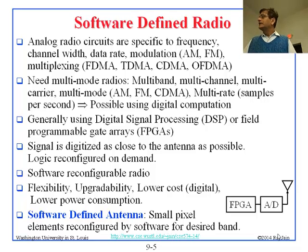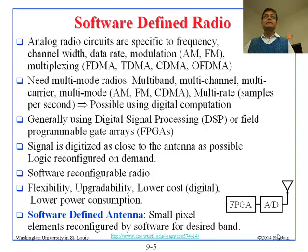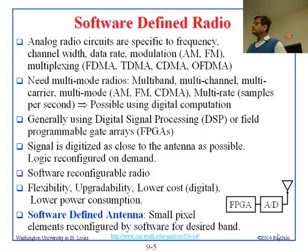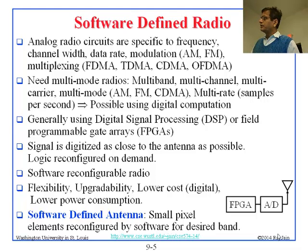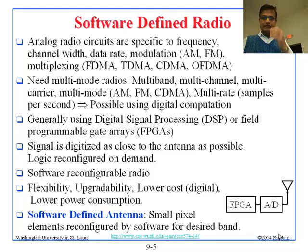Once it is digital, we can use high-powered computers and process it any way we want. We generally use digital signal processors or FPGAs. FPGAs are field programmable arrays — you can program them in hardware to do any algorithm you want, and they are very fast for special purposes. The signal is digitized as soon as it comes in via the A-to-D converter, then the digital signal goes into the FPGA, and you can change the software by any method. This is very flexible, very upgradable, and because it is digital, it has become really low-cost and low-power consumption.